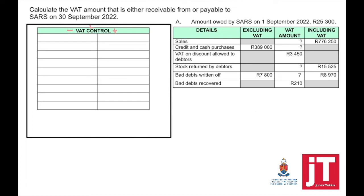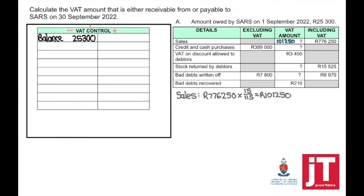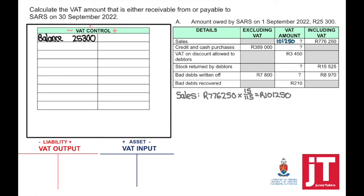The amount owed by SARS on 1 September 2022 was R25,300. Because this amount is owed by SARS, it will appear on the debit side. The first transaction is sales, and we need to find the VAT amount. They provided us with the amount including VAT, so to find the VAT amount we say times 15 divided by 115. Since we're collecting VAT, output VAT will be credited, and therefore the VAT control account will also be credited.